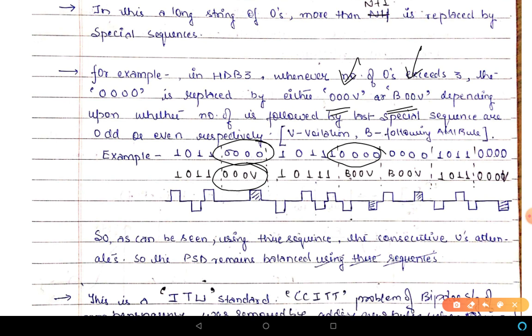For the next group of four zeros, the choice between '000V' and 'B00V' is decided by the number of ones following the previous special sequence. In this case, counting the ones: one, two, three, four — the number of ones is even. Therefore, we use the special sequence 'B00V'.